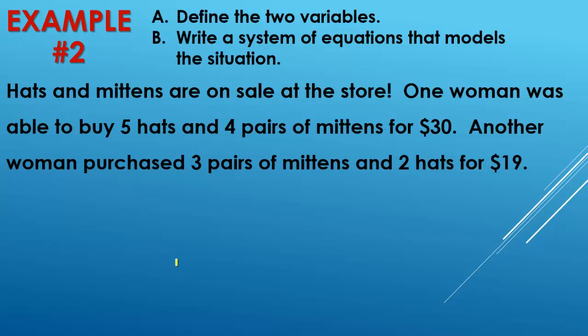Okay. So again, we're defining the two variables and we're writing a system of equations that models it. So hats and mittens are on sale. One woman is able to buy five hats and four pairs of mittens for $30. Another woman purchases three pairs of mittens and two hats for $19. Okay. Now, something to be careful of here. Pairs of mittens and pairs of mittens. So what I want you to be aware of is that they're listed in a different order. So we're going to say H is hats, M is mittens.